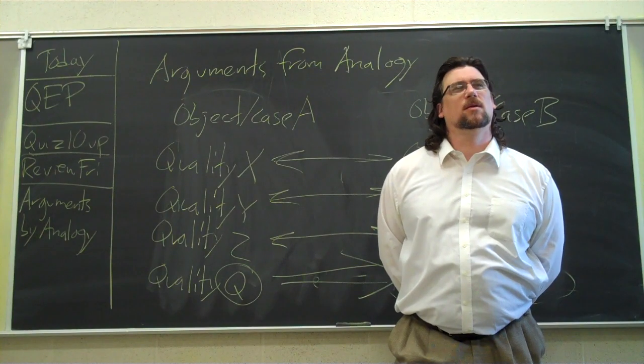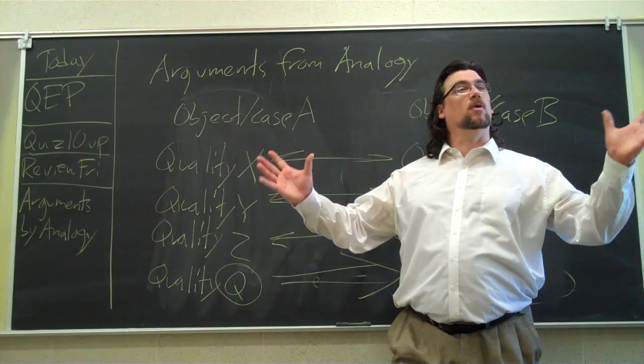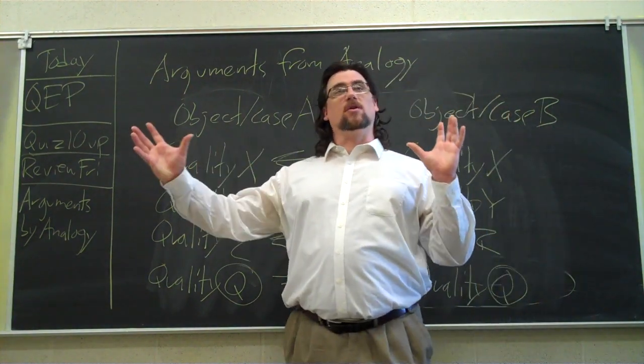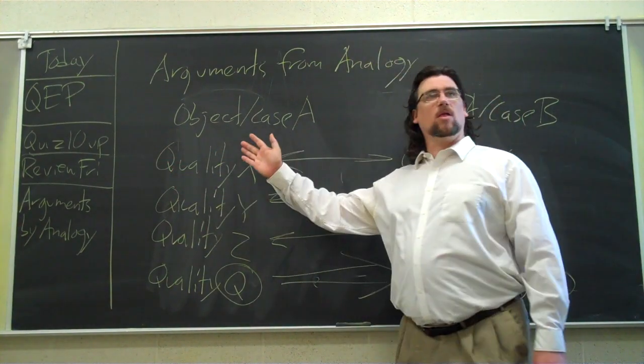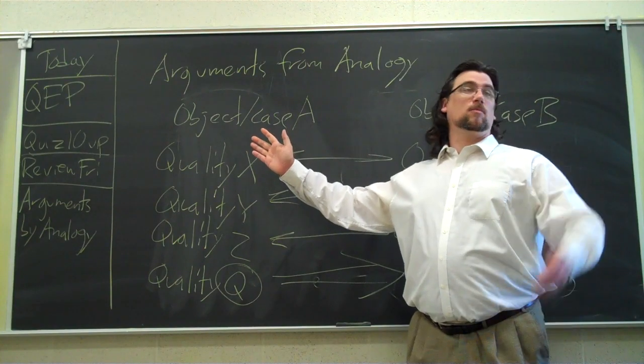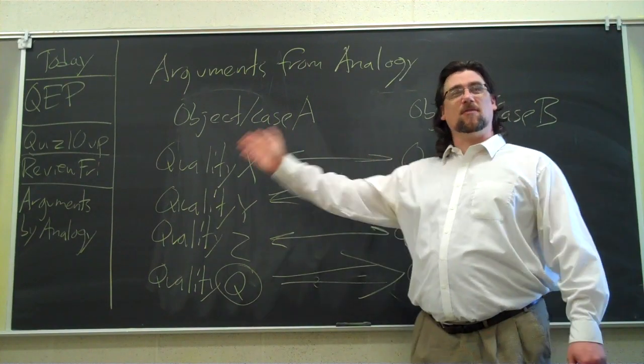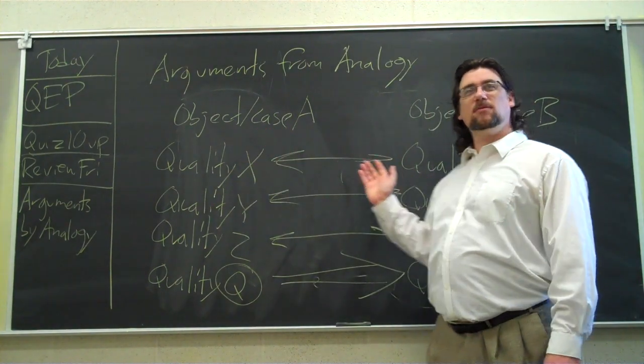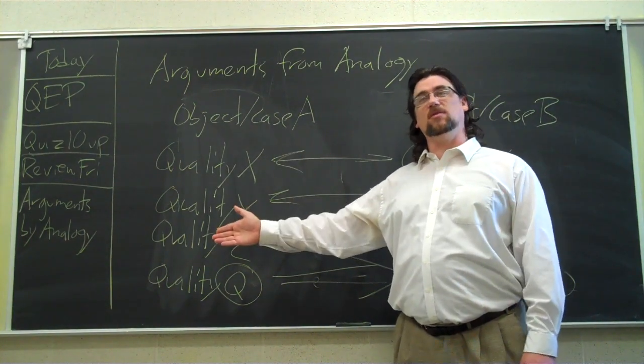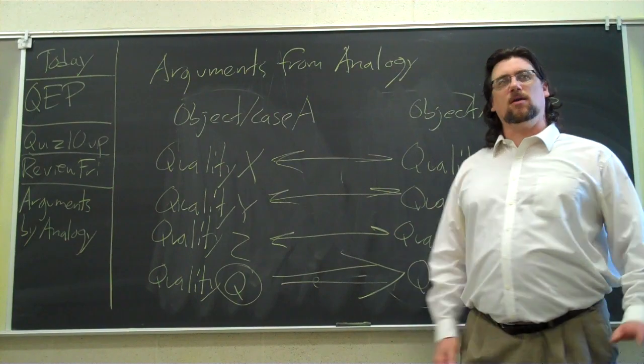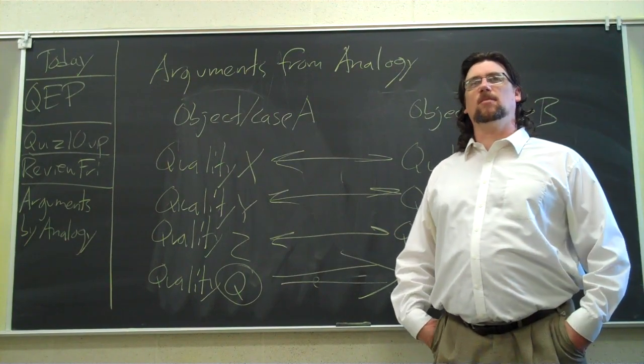Was that the George Romero one that had, like, John Leguizamo in it? Who was in that one? Do you remember offhand? No, let's take those two. Okay, so if you like Dawn of the Dead, you'll like Zombieland. Right? Why? Well, what qualities do they have in common? They've got zombies. They've got people trying to get away from zombies. If you're into blood and guts and gore and stuff like that, those movies have that sort of thing as well. Any other qualities you can think of that they have in common?